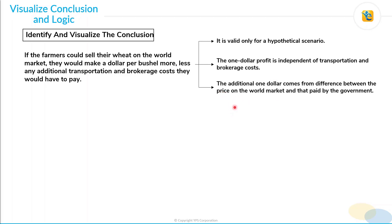The third thing is that the additional one dollar comes from the difference between the price on the world market and that paid by the government. The production cost has nothing to do with it — it's only the two different selling prices that the farmers are getting: one is the world market price and the other is the one paid by the government.